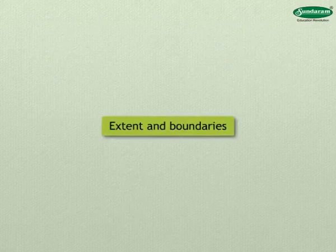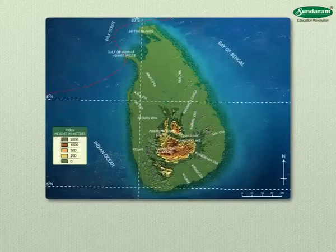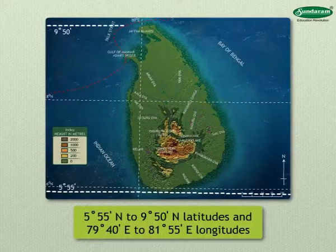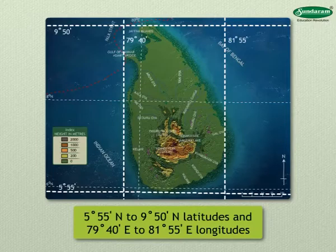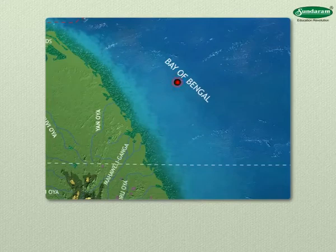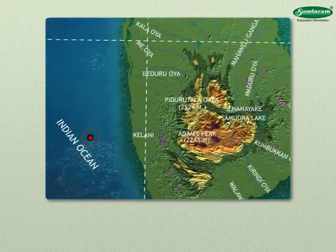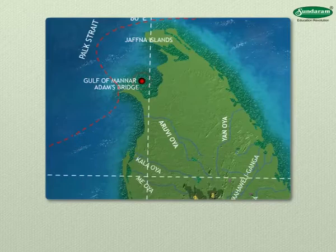Sri Lanka extends from 5 degrees 55 minutes north to 9 degrees 50 minutes north latitudes and 79 degrees 40 minutes east to 81 degrees 55 minutes east longitudes. The Bay of Bengal lies to the north and east of Sri Lanka. The Indian Ocean lies to its west and south. The Gulf of Manar lies between India and Sri Lanka.